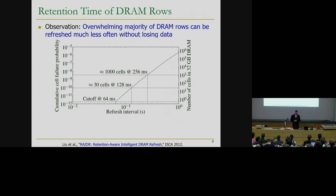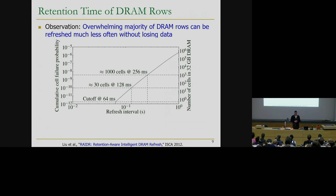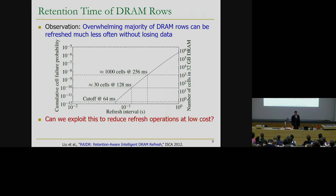In this figure, on the x-axis you see the refresh interval and on the y-axis the cumulative cell failure probability, and on the right-hand side the number of cells in a 32-gigabyte DRAM that fail at that given refresh interval. For example, at 128 milliseconds, only about 30 cells fail, and at 256 milliseconds only about 1,000 cells fail. This is a very small amount when we consider the entire module, which has billions of cells. So there's definitely a lot of unnecessary refresh going on when we treat every cell equally and refresh at 64 milliseconds. Can we exploit this to reduce the refresh operation at low cost?